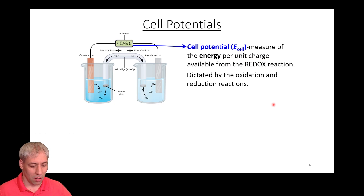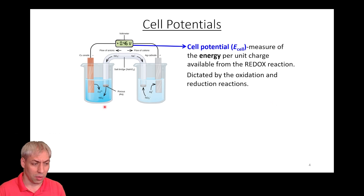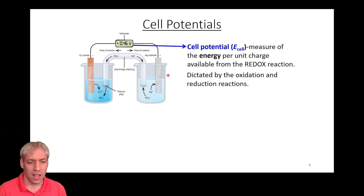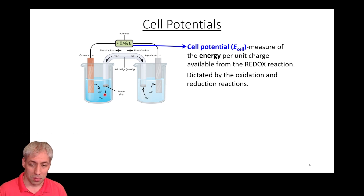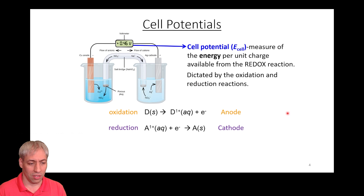The cell potential describes how much driving force there is for electrons to move from one electrode to another — from the anode to the cathode. That's going to be dictated by the materials. The difference between copper and silver, or zinc and copper, will dictate the cell potential, or how much voltage we can get out of one of these cells.